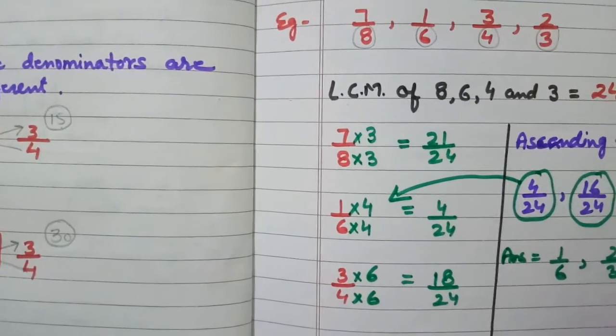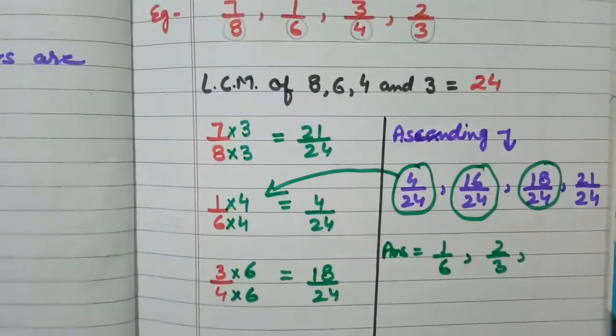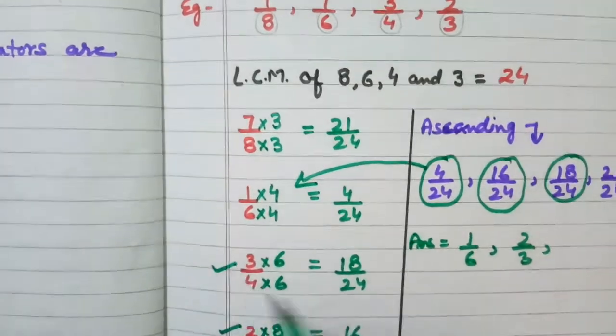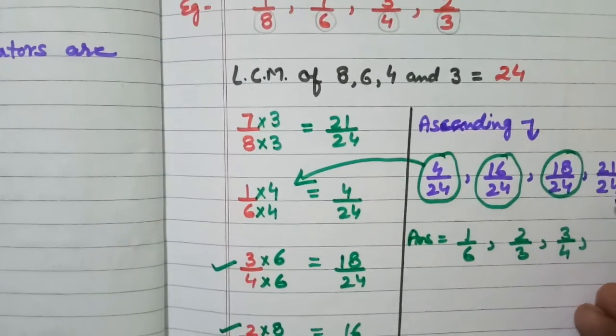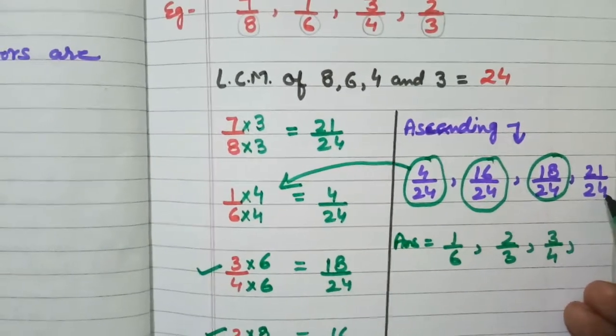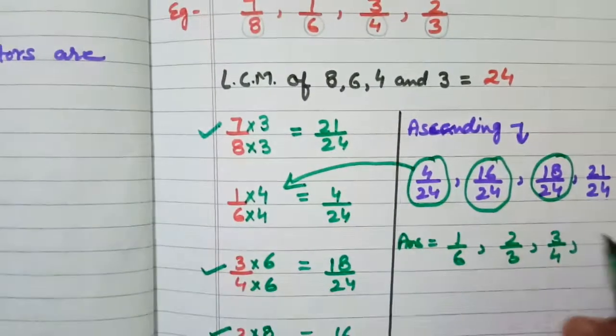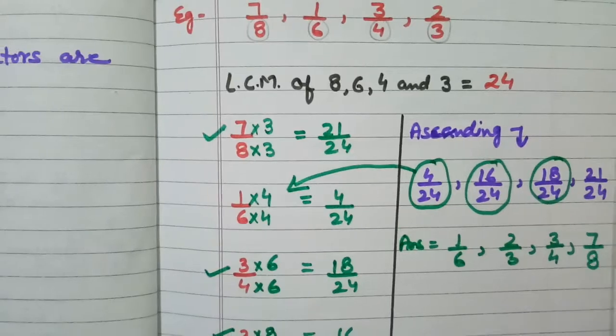And 18 upon 24, we have got 18 upon 24 from 3 upon 4. So, we will write 3 upon 4. 21 upon 24. This fraction we have got from 7 upon 8, so we are writing 7 upon 8.